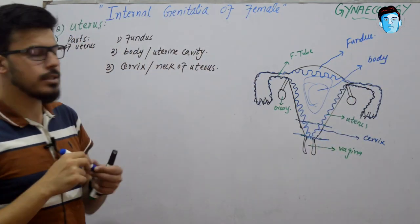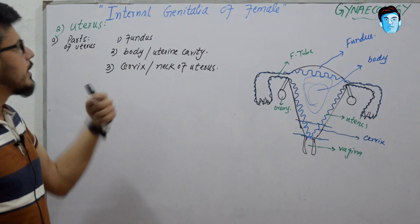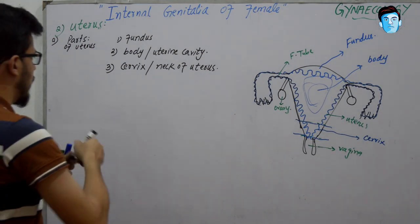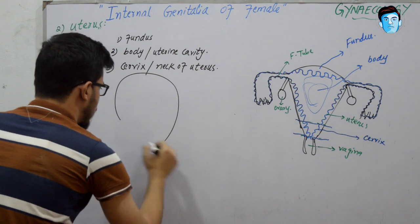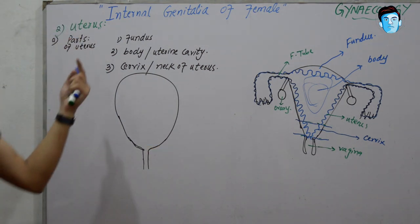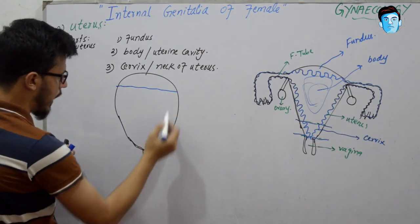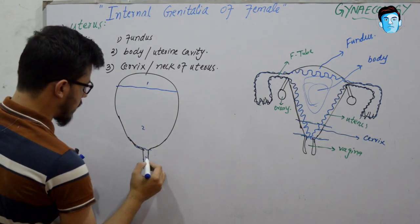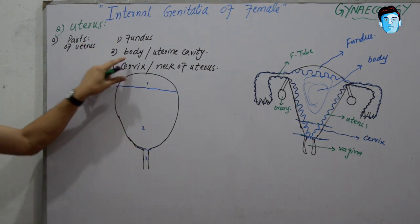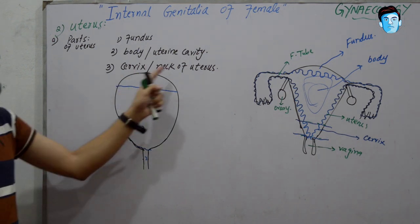The body of the uterus is wider above and becomes narrower as you move downward. The body is the most important part because it is the site of implantation. The cervix is also called the neck of the uterus. The inner portion is called the cervical canal, which has an upper part called the internal os and a lower part called the external os.